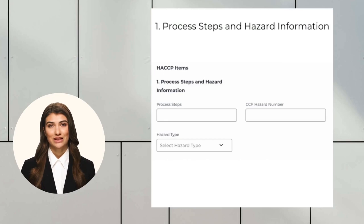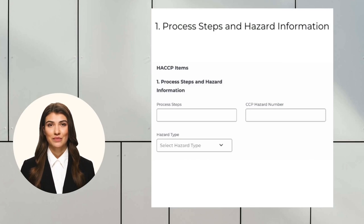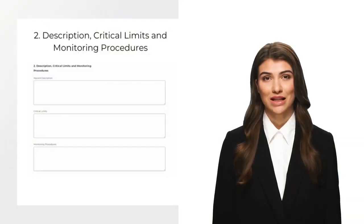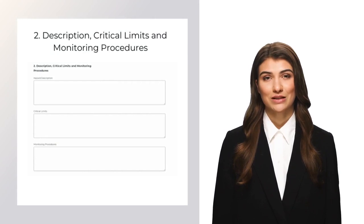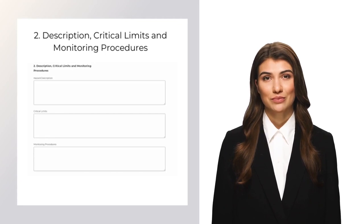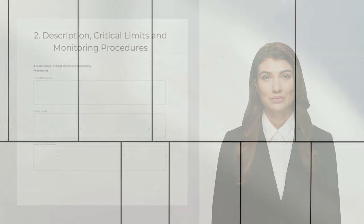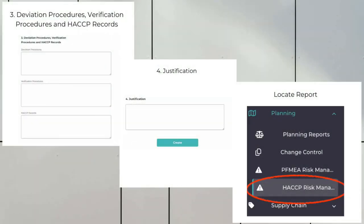Enter the process steps, CCP hazard number, and hazard type — which is a drop-down that gives further options: chemical, physical, biological, or other. After entering process steps and hazard information, move to Description, Critical Limits, and Monitoring Procedures and enter the hazard description, critical limits, and monitoring procedures. Then move to Deviation Procedures, Verification Procedure, and HACCP Records and enter the deviation procedures, verification procedures, and HACCP records.